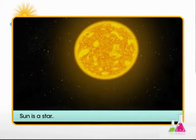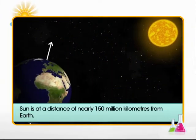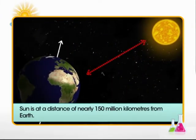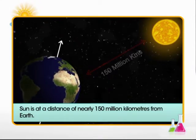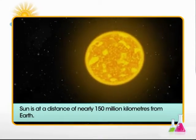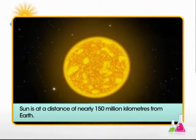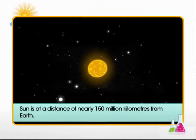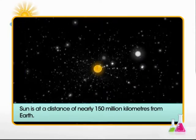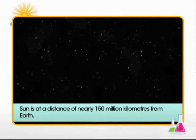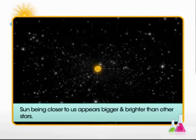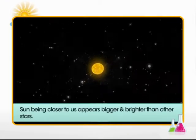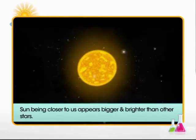Sun is a star too. Sun is at a distance of nearly 150 million kilometers from Earth, while other stars in the sky are millions of times farther away than the sun. Sun being closer than other bigger stars appears bigger and brighter than other stars.